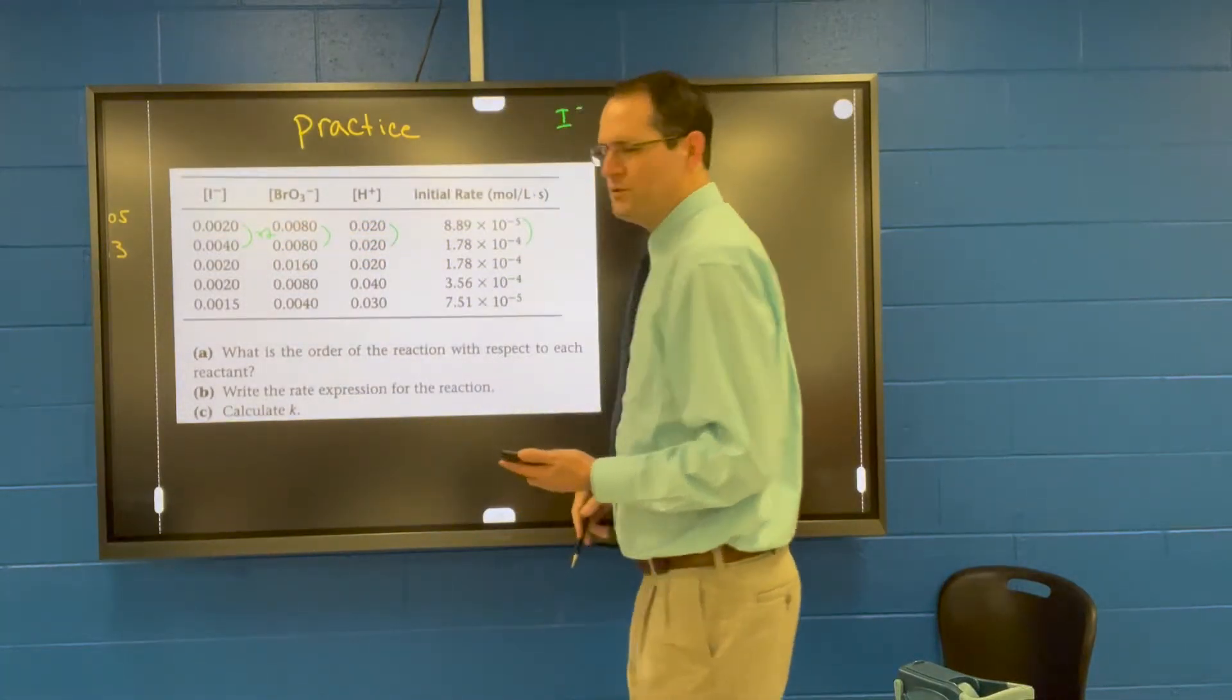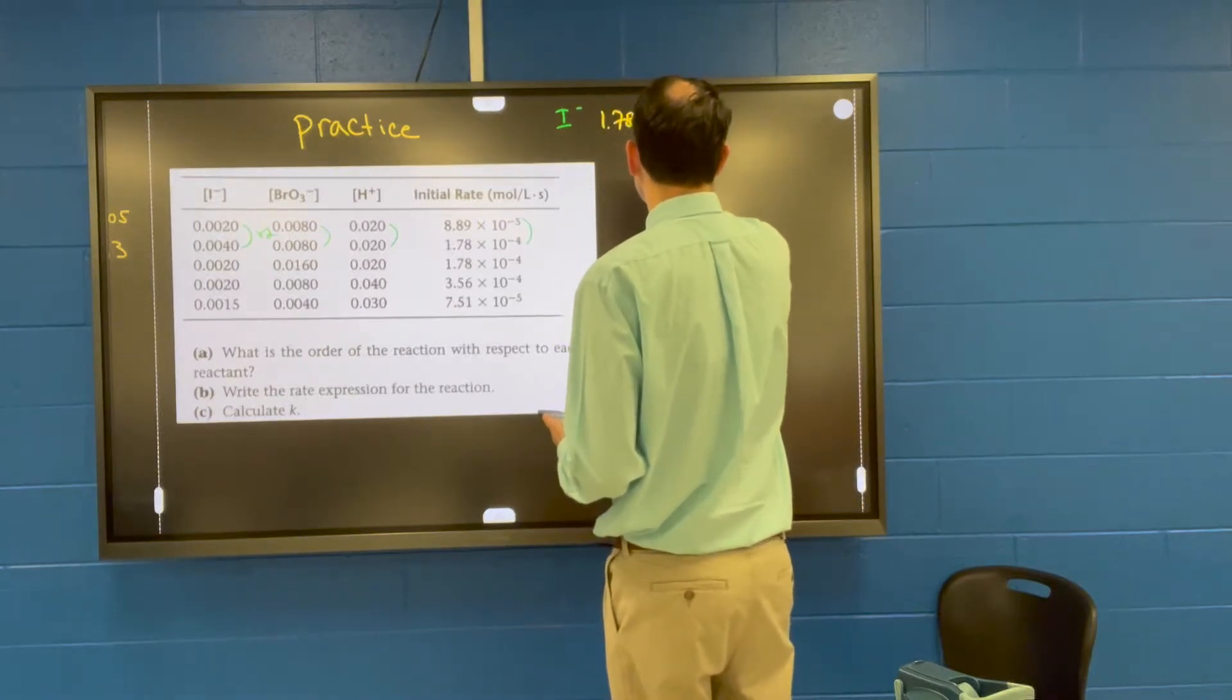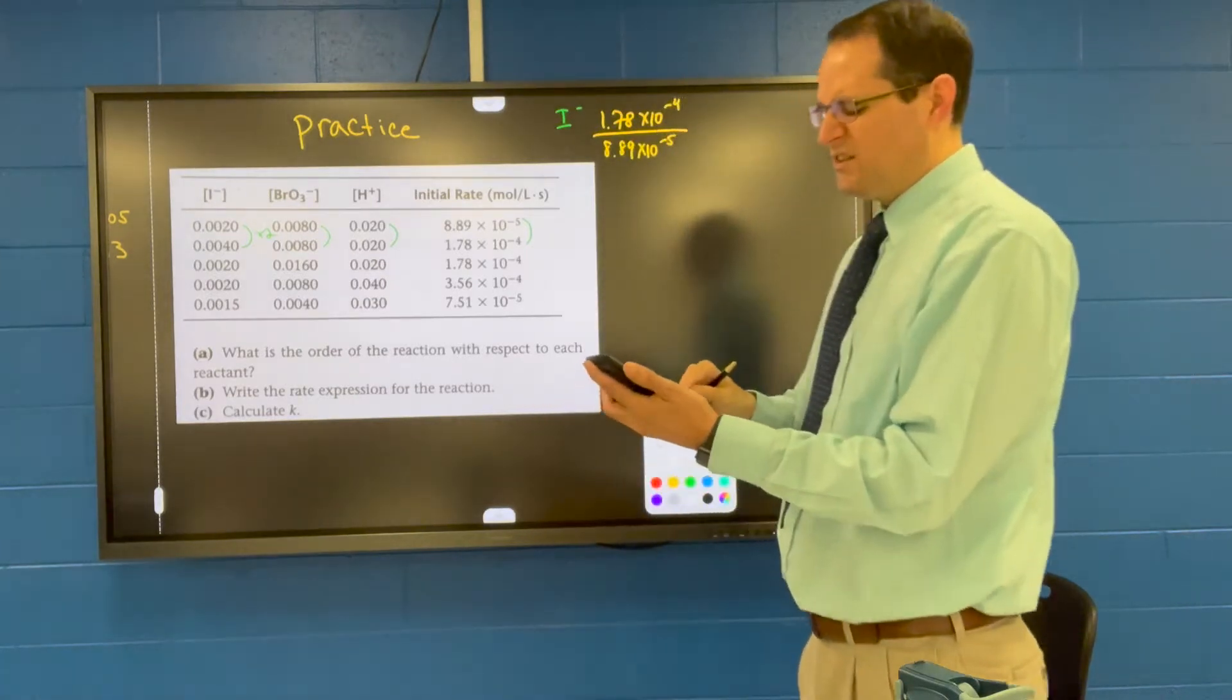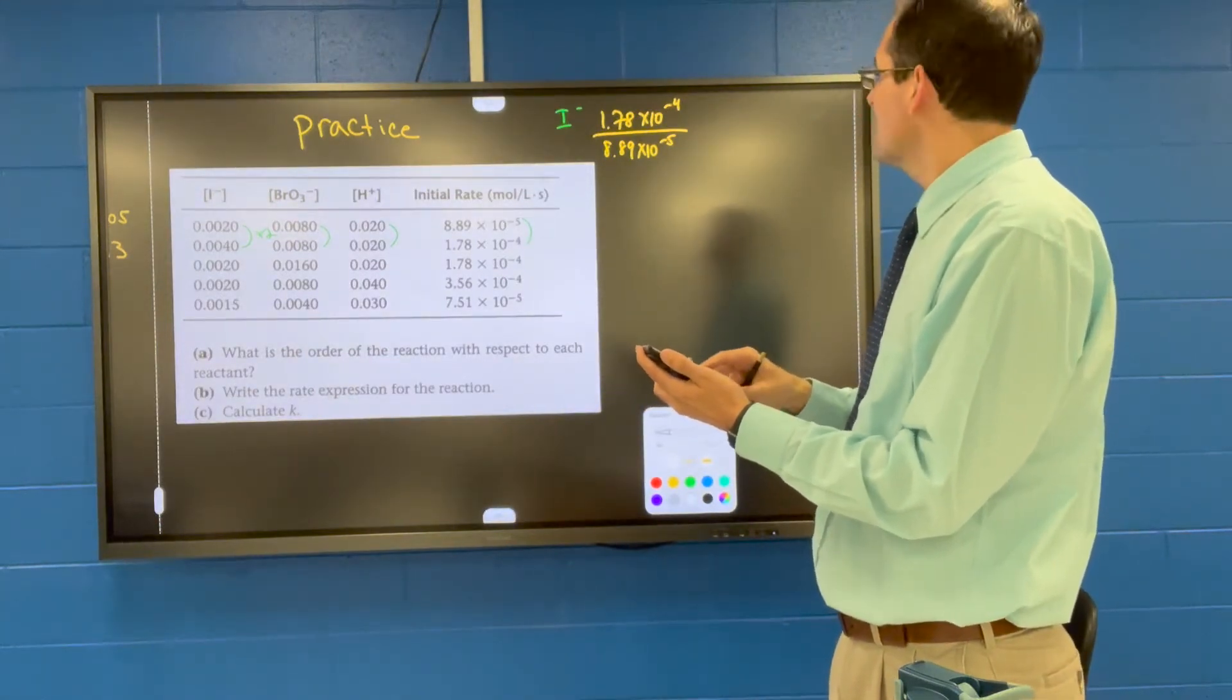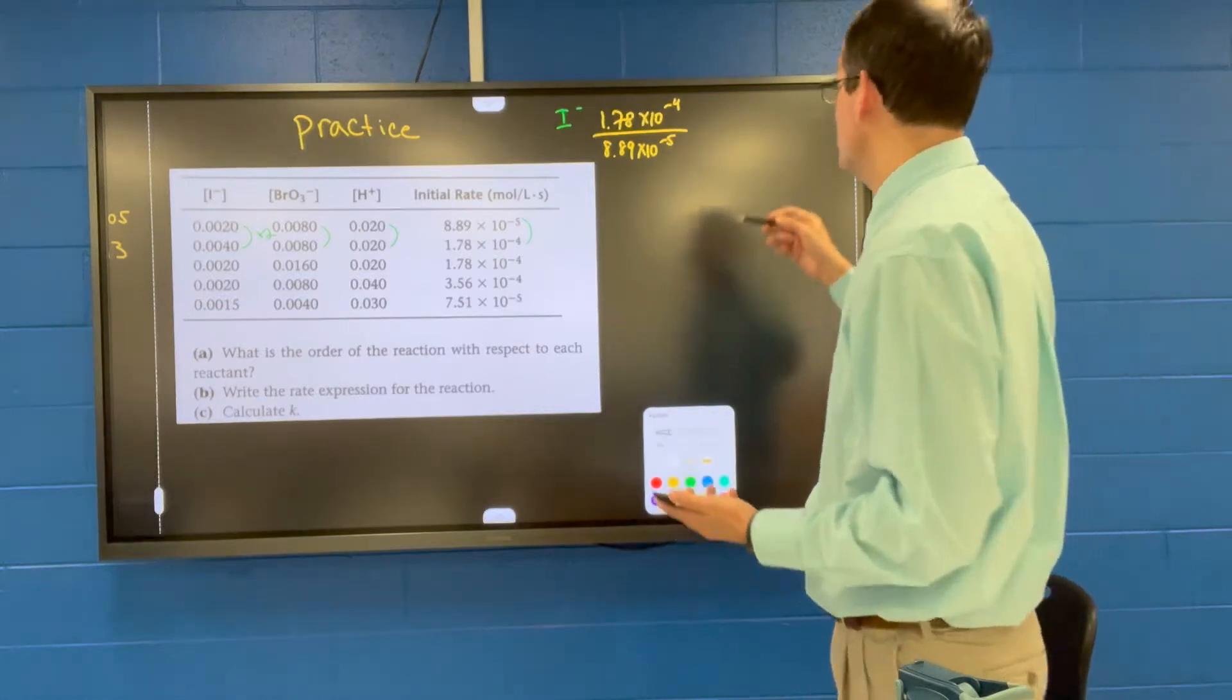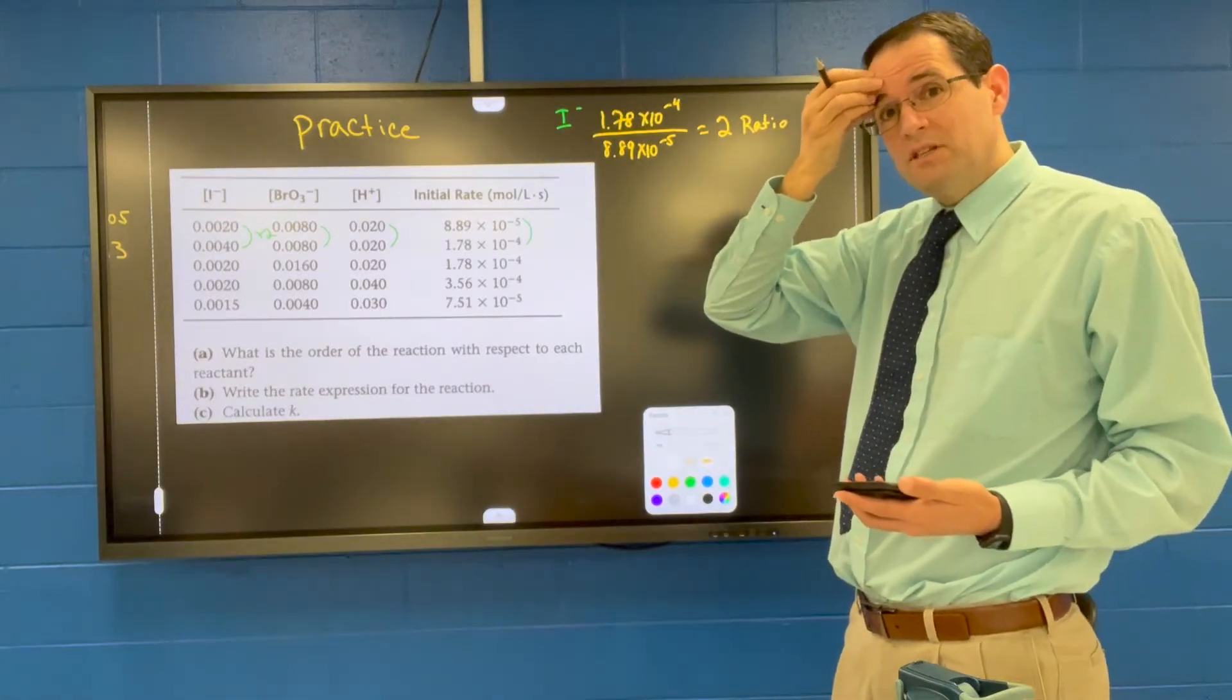Okay so first we want to find out what the rate ratio is. So it's 1.78 times 10 to the minus 4, that's the larger rate, and you divide that by the smaller rate. And if you do this on your calculator, you get 2.002249. Okay so this is the ratio and remember that if the ratio is two, it means it's first order.